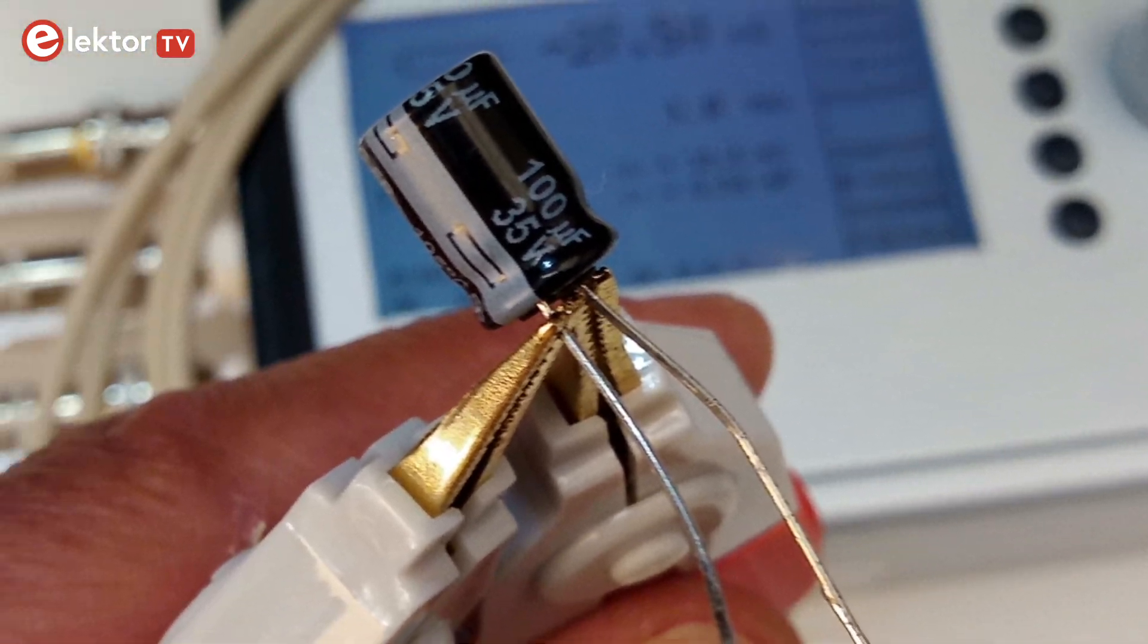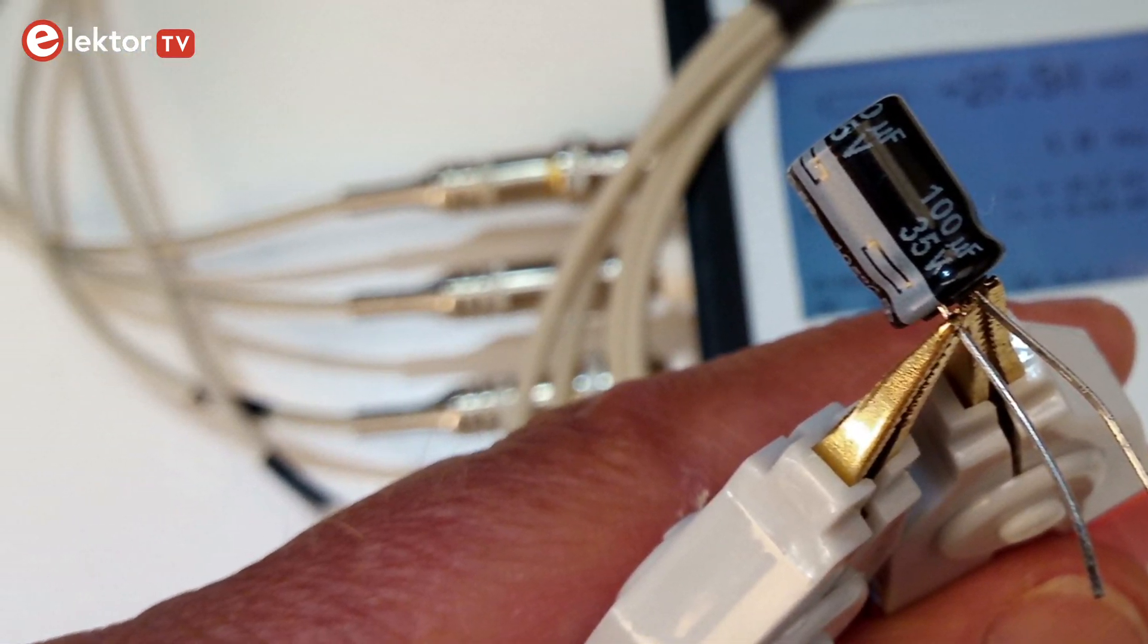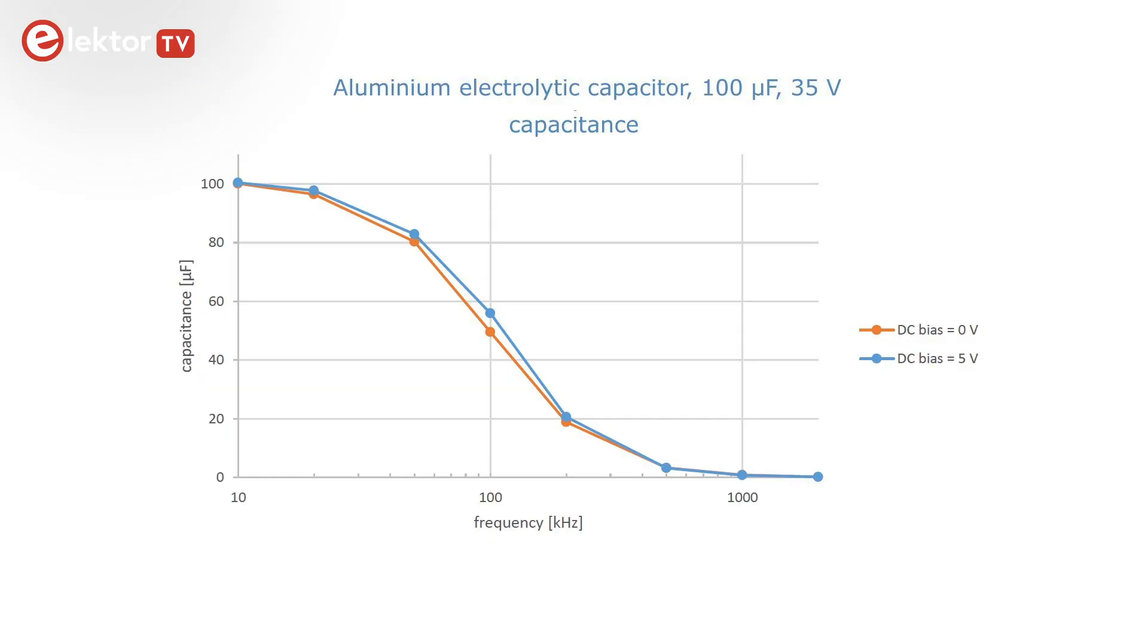Here are the results. First, the capacitance versus frequency of the 100μF aluminium electrolytic capacitor. At 100kHz its value is down to about 50%. With a DC bias voltage the capacitance is slightly higher.